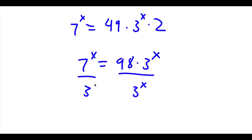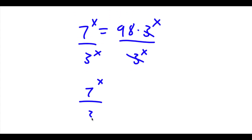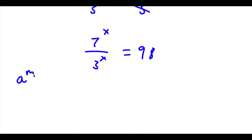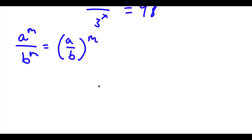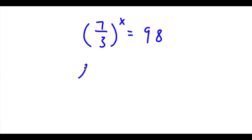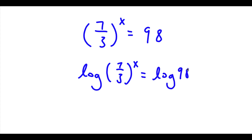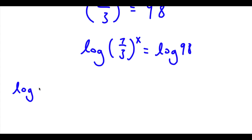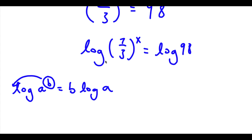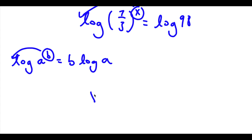I can divide both sides by 3 to the power of x, so these two cancel out and I'll be left with 7 to the power of x over 3 to the power of x is equal to 98. If I have something in the form a to the power of m over b to the power of m, this is equal to a over b to the power of m. So 7 to the power of x over 3 to the power of x equals 7 over 3 to the power of x, which is equal to 98. Now I'm going to take the log on both sides, so I have log of 7 over 3 to the power of x is equal to log 98. Using the property that log a to the power of b equals b times log a, I can move the exponent x to the front: x times log 7 over 3 is equal to log 98.